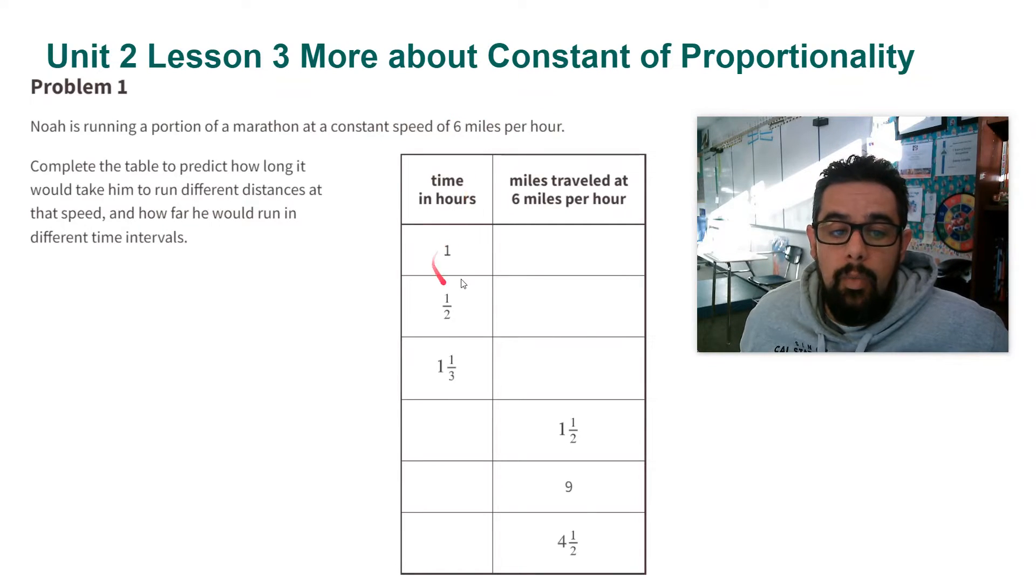of proportionality. In one hour he's going to run 6 miles. Now for all these other ones, because we have the one hour is 6 miles, we can just multiply these numbers by 6. That's going to tell us what it is. So for the second row, one half traveled at 6 miles per hour would be 3